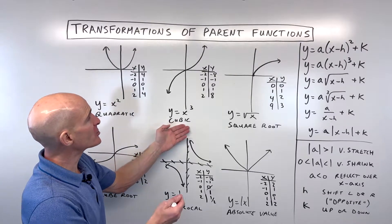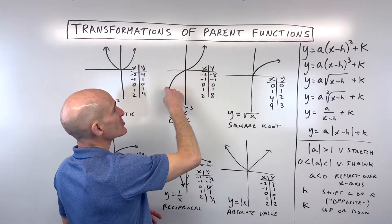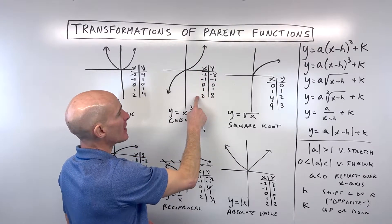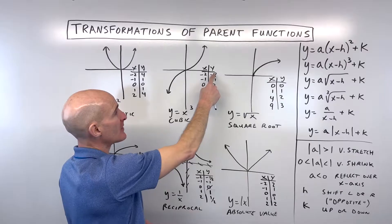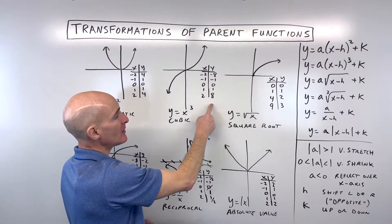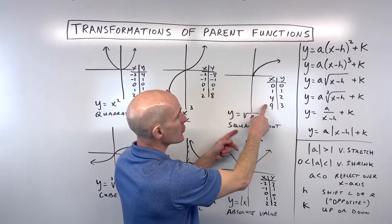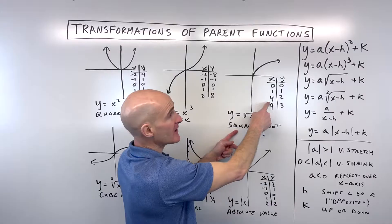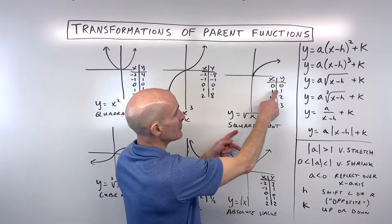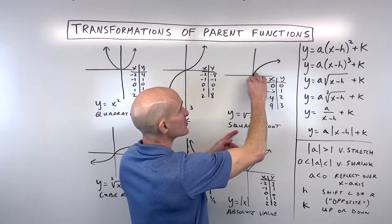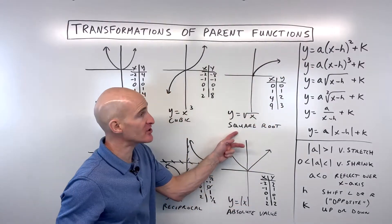The cubic function looks like this shape here — I'm using a couple negative values, zero, and a couple positive, then cubing them. The square root function: I'm picking the numbers 0, 1, 4, 9 because they're easy to take the square root of, giving us 0, 1, 2, 3. Notice the square root function just goes in one direction.